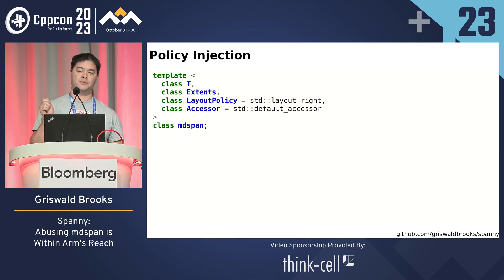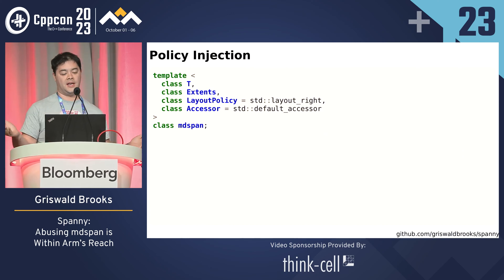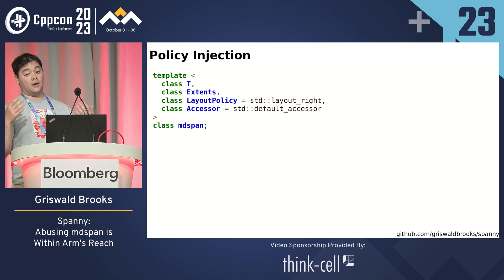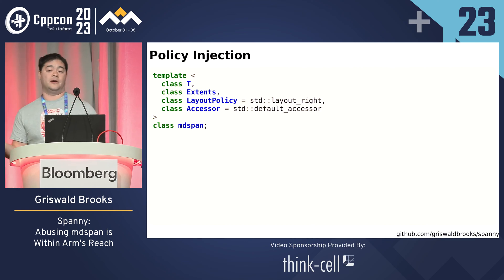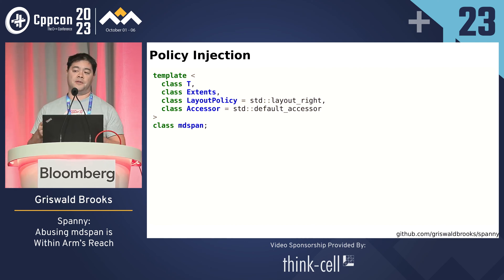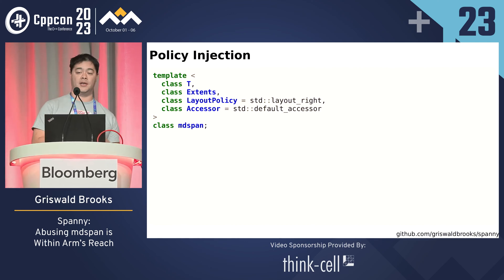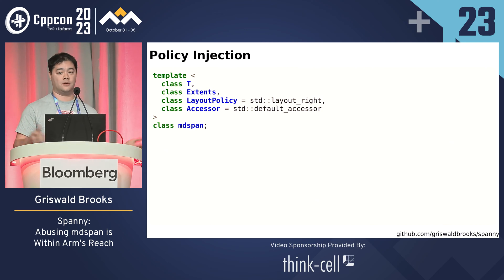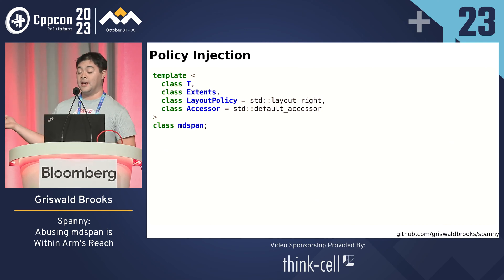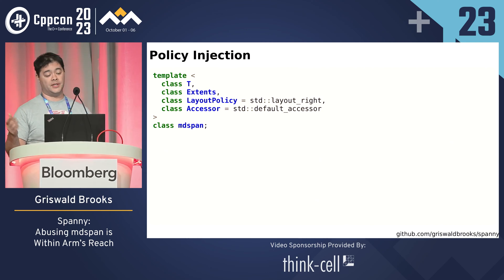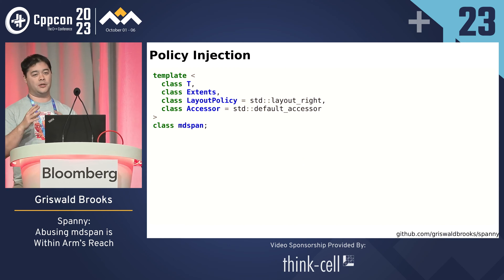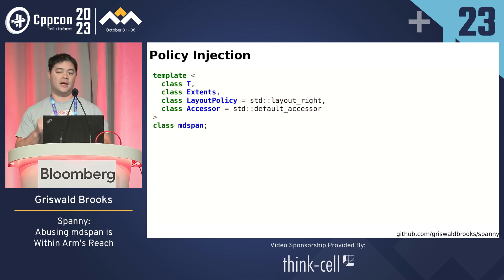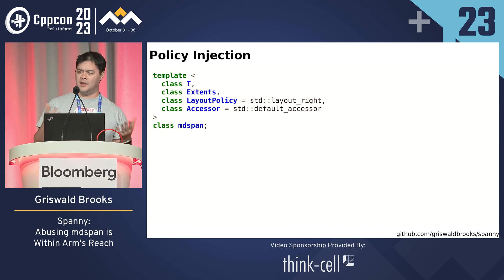Not only does it allow you to specify the type of data that you might be referring to, not only does it allow you to refer to the extents — the dimensions, the shape of your data, whether it's 1 by N or 3 by 3 or something like that — it also gives you two policy injection points. One of them being the layout, how you think about arranging your data, and the last one being the accessor.